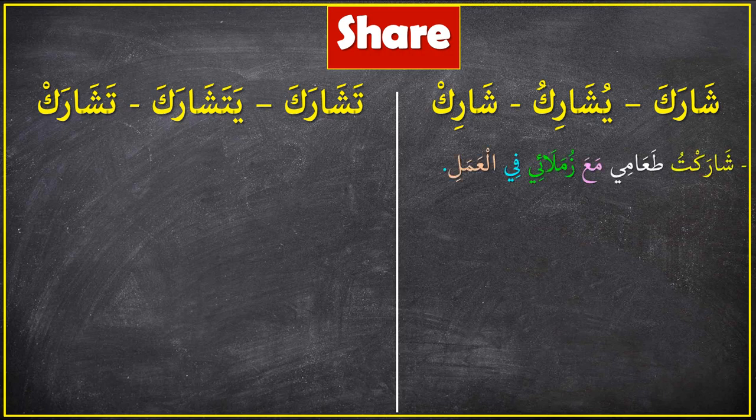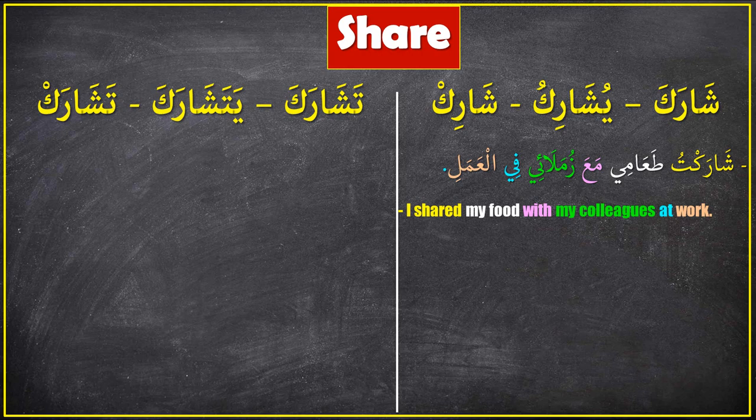First sentence for شارك: شاركت طعامي مع زملائي في العمل — it means 'I shared my food with my colleagues at work.' شاركت — I shared — طعامي — my food — مع — with — زملائي — my colleagues — في العمل — at work.